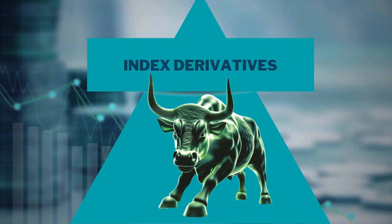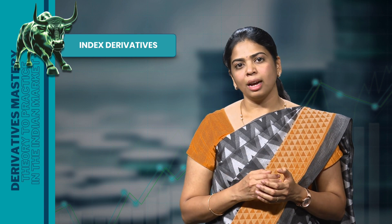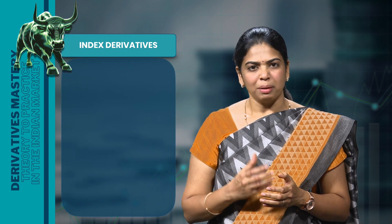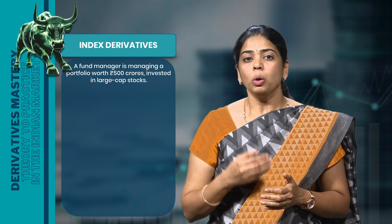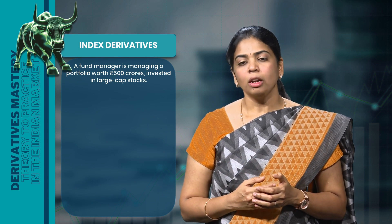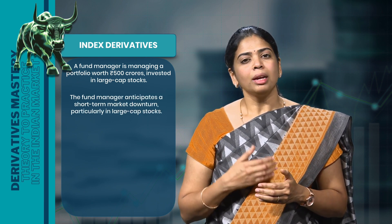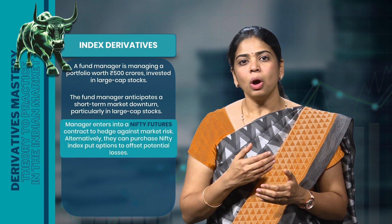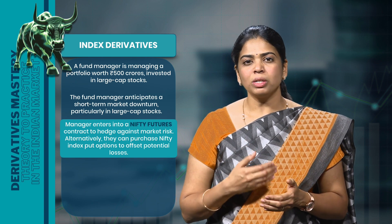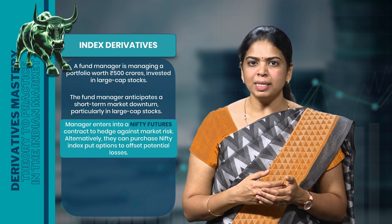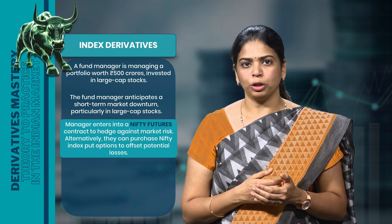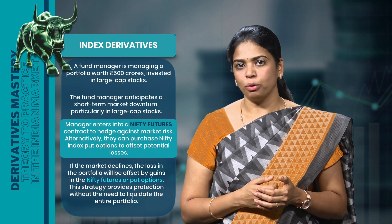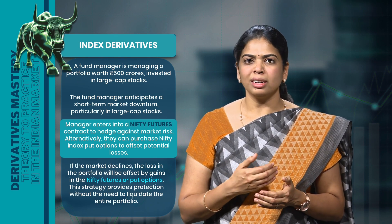Now let us move on to index derivatives. In the case of index derivatives, the value of the contract is derived from an underlying broad market index such as the Nifty 50. For example, consider a fund manager overseeing a portfolio worth Rs.500 crores invested in various large cap stocks. If the fund manager anticipates a short-term market downturn, instead of selling all the stocks, he can enter into a derivative contract by selling Nifty futures or by buying Nifty index put options. So even if stock prices fall, the losses incurred will be compensated by profits made in the Nifty futures or put option. To determine how many units of Nifty futures to sell for a perfect hedge, we need to know the beta of the portfolio, which we will cover with real market data in upcoming videos.